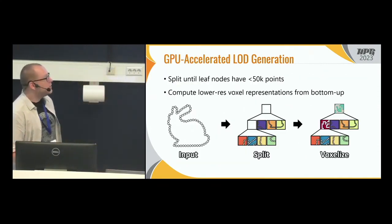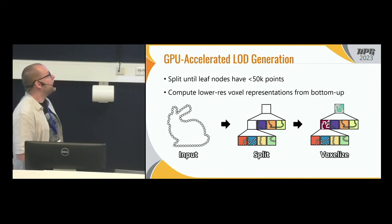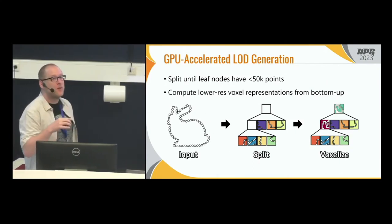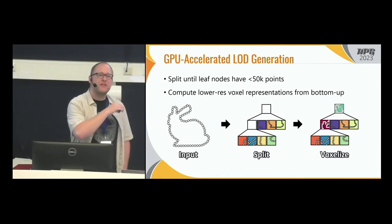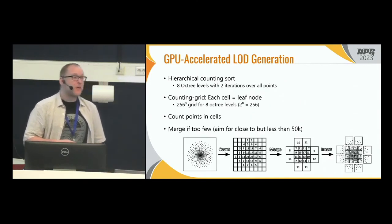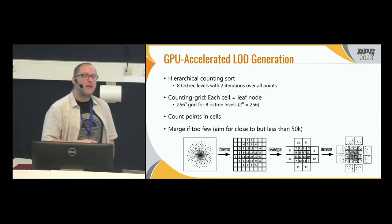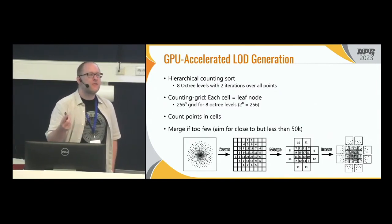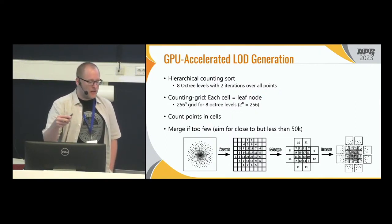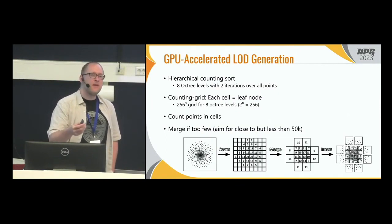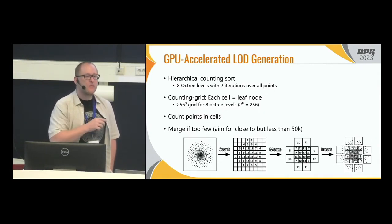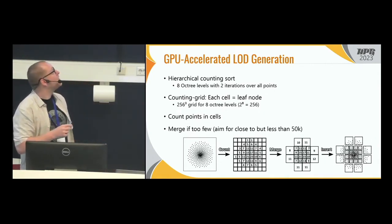Here's what we do on a GPU to make this faster. We have our input point cloud, and the first thing we do is split all the points into leaf nodes with at most 50,000 points. Then we populate the still-empty inner nodes with voxel representations from the bottom up. We use a hierarchical counting sort, which lets us generate an octree with a depth of eight levels with just two iterations over all the points. For counting sort, we need a counting grid of size 256³ — one counter for each potential leaf node at the highest level.